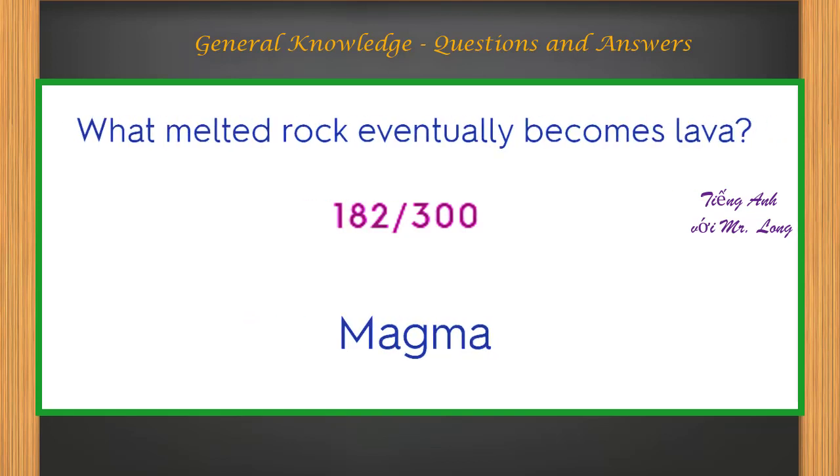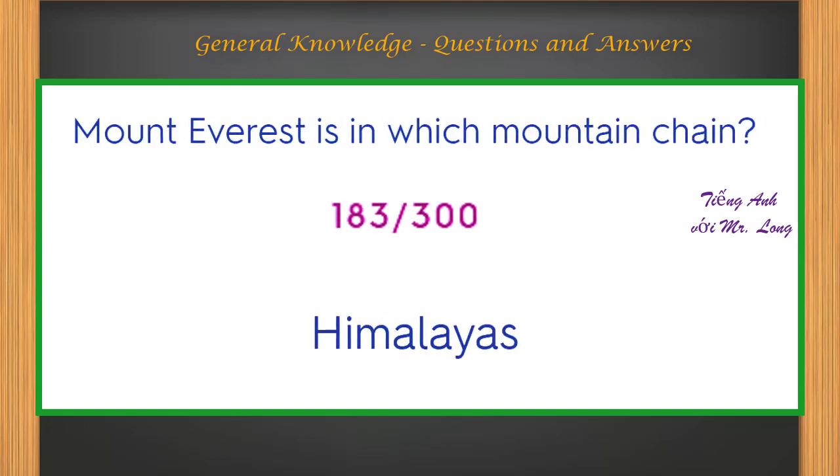What melted rock eventually becomes lava? Magma. Mount Everest is in which mountain chain? Himalayas.